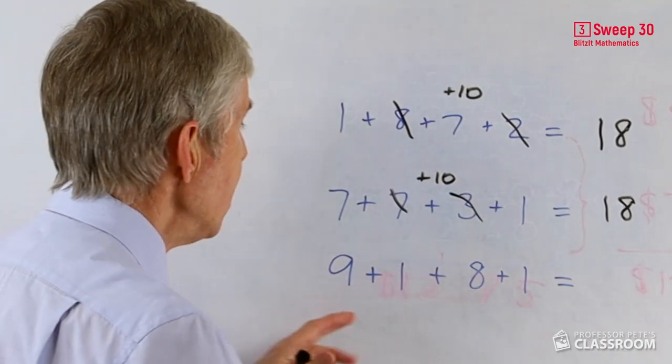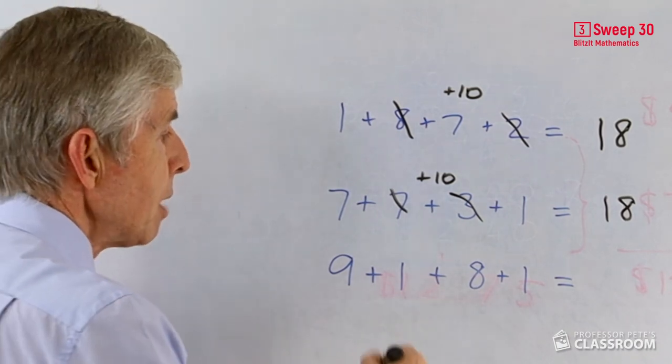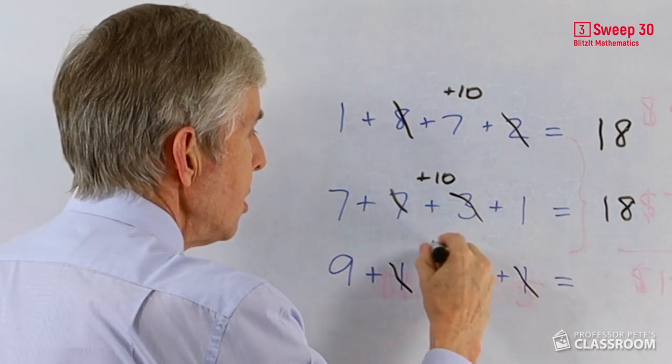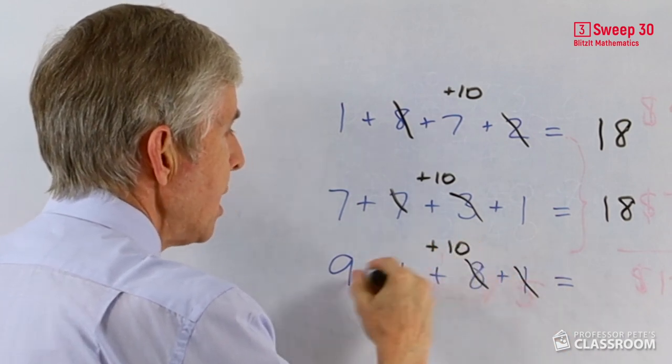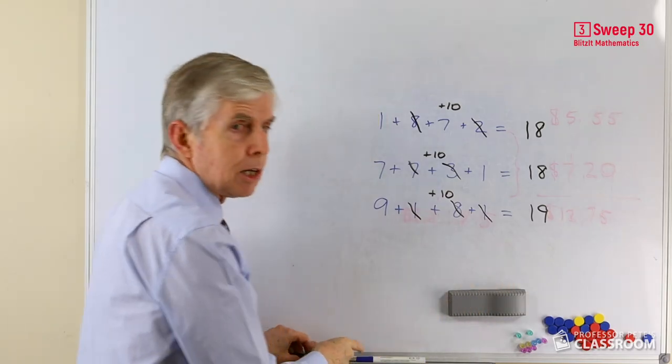And then a third example: 9 plus 1 plus 8 plus 1. 9 and 1 is 10, but notice there's also 8 plus 1 plus 1. I'm going to use that one just for an alternative, that makes 10. 9 plus 10 is 19.